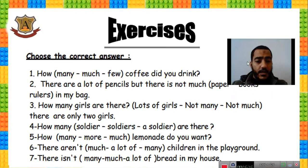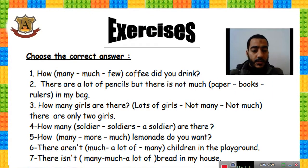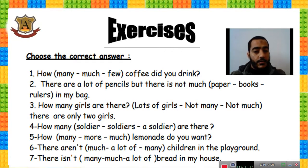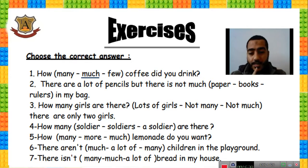Now let's answer the booklet. Number one: how much coffee did you drink? Coffee is uncountable, so the answer is 'much.' Number two: There are a lot of pencils but there is not much paper — because 'there is' means it must be singular, so the answer is 'paper.'